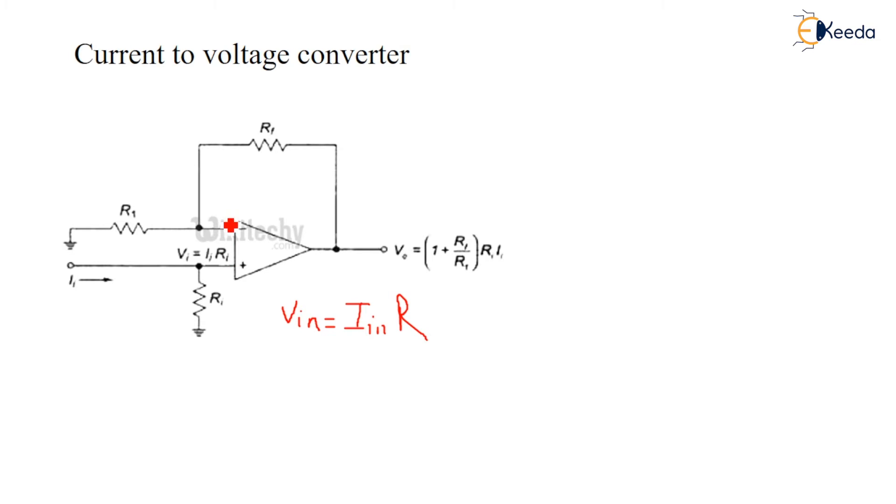We know this is non-inverting configuration. So the gain will be 1 plus RF upon R1 into VIN. So the output voltage is equal to 1 plus RF upon R1 into VIN.